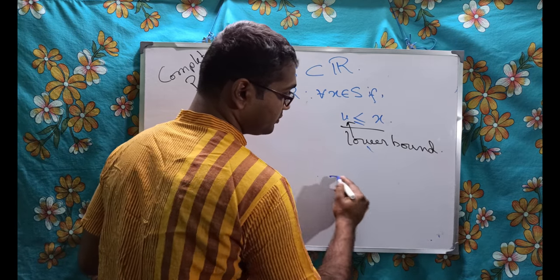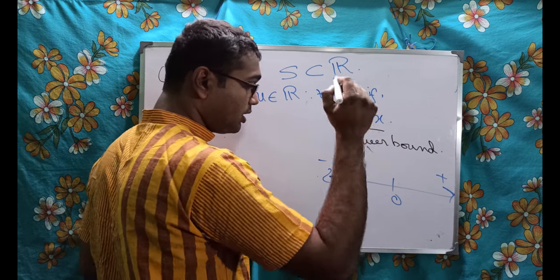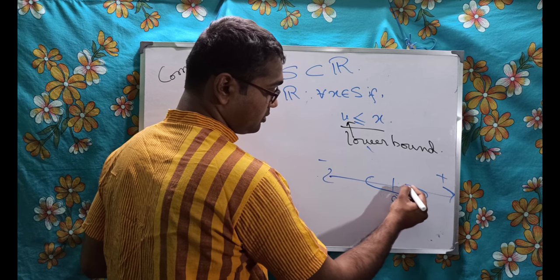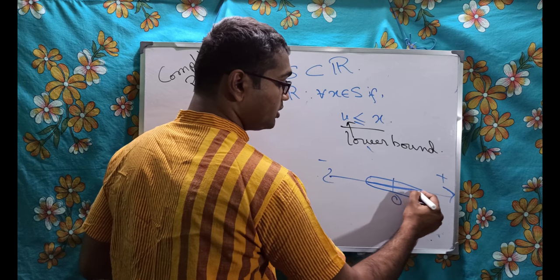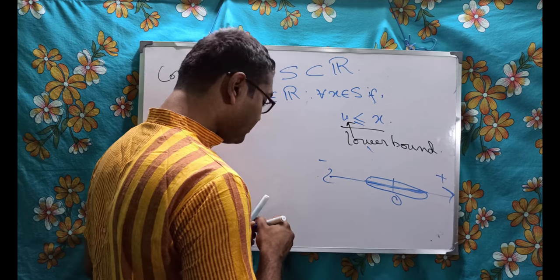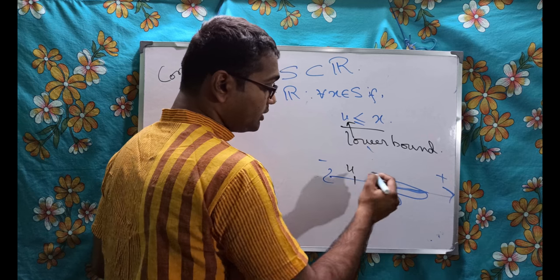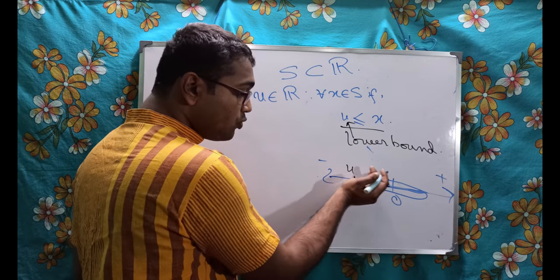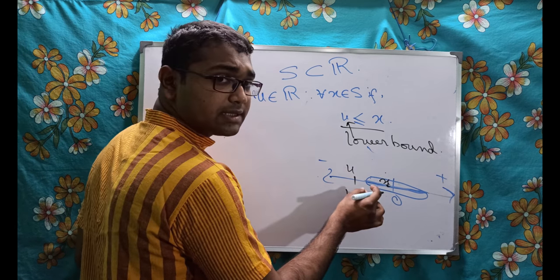This is my real number. Positive side, negative side, here is zero. Imagine that S is my this portion. All the numbers here constitute the set S. Now if I take a number from here, let it be U. And for any X belongs to here in this side, see U is less than X. U is obviously less than or equal to X.